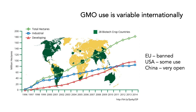The use of genetically modified organisms is incredibly variable internationally. Some places, like the European Union, have effectively banned them. In other places, like China, GMOs are incredibly common. And then there are countries in the middle, like the United States, where there is some use for particular organisms.